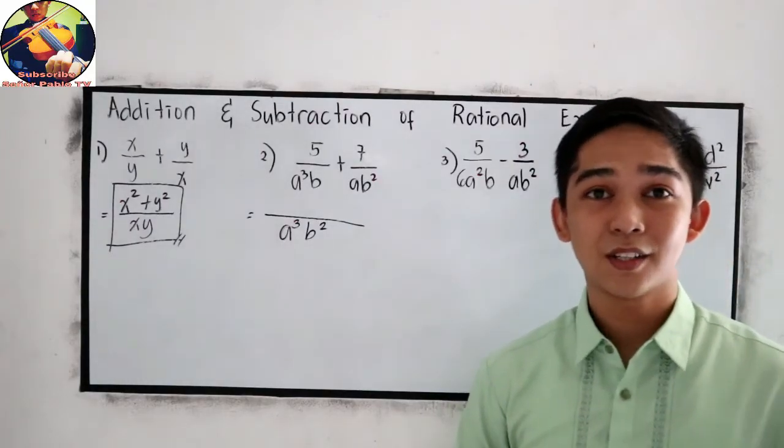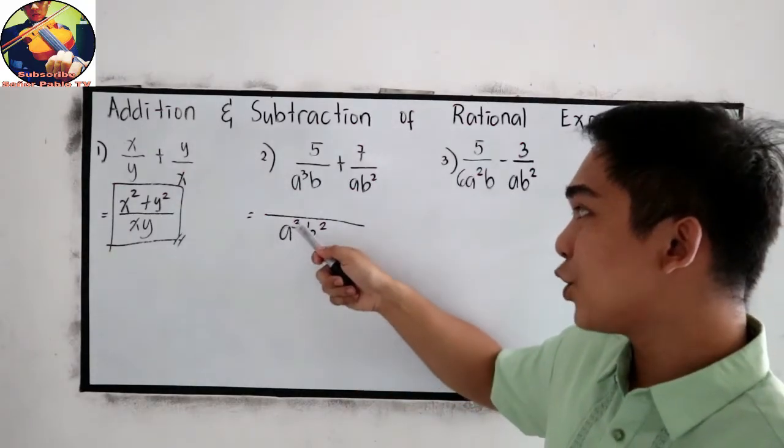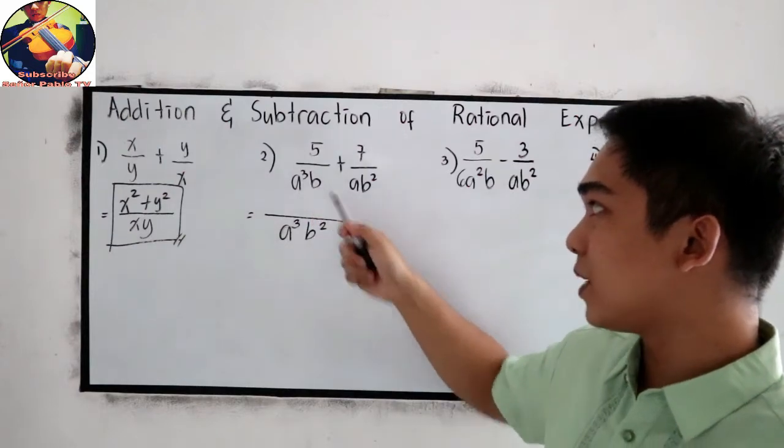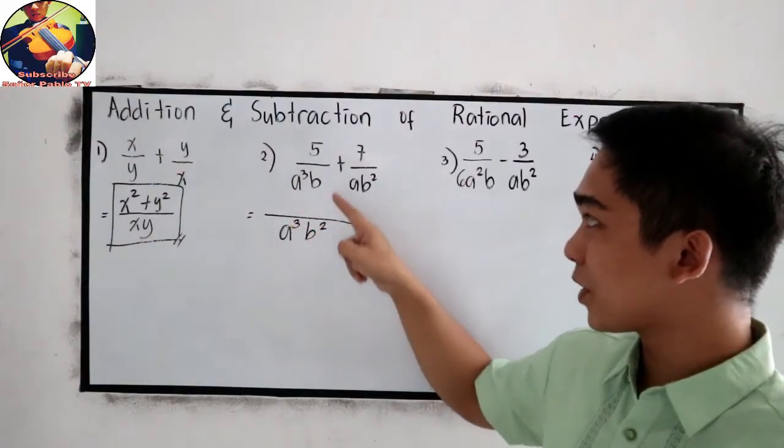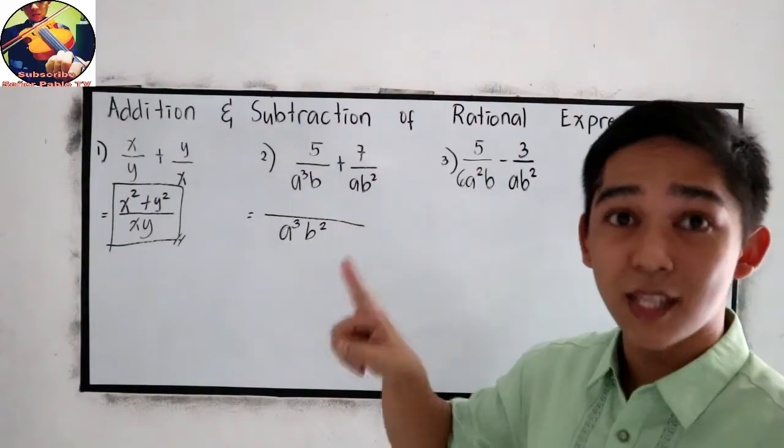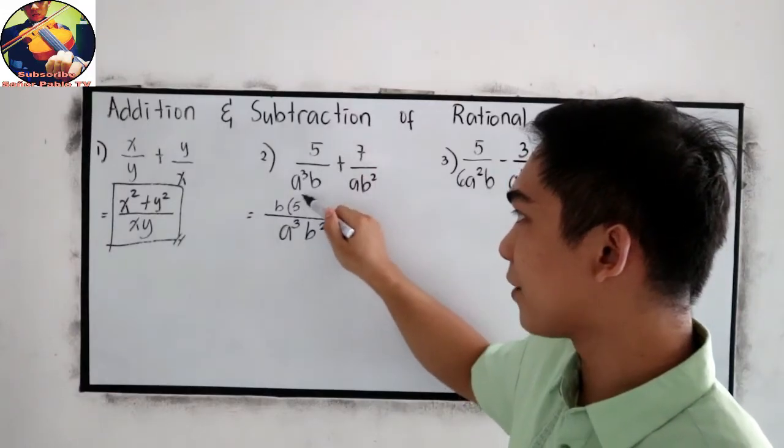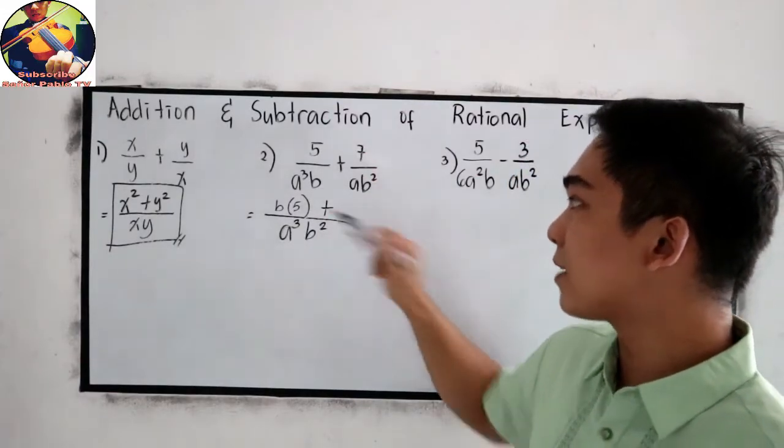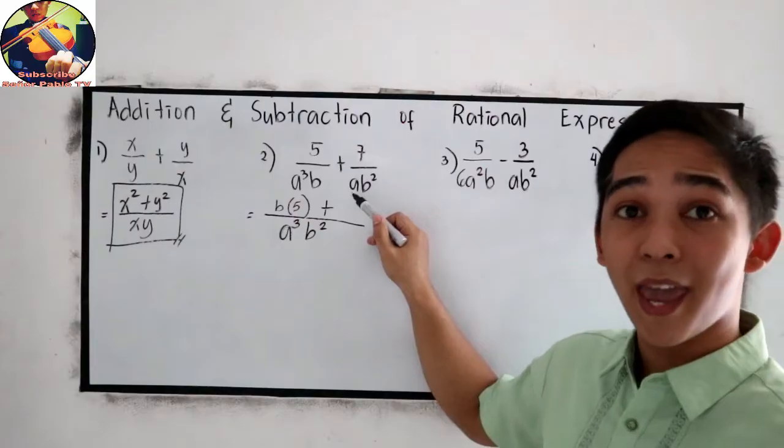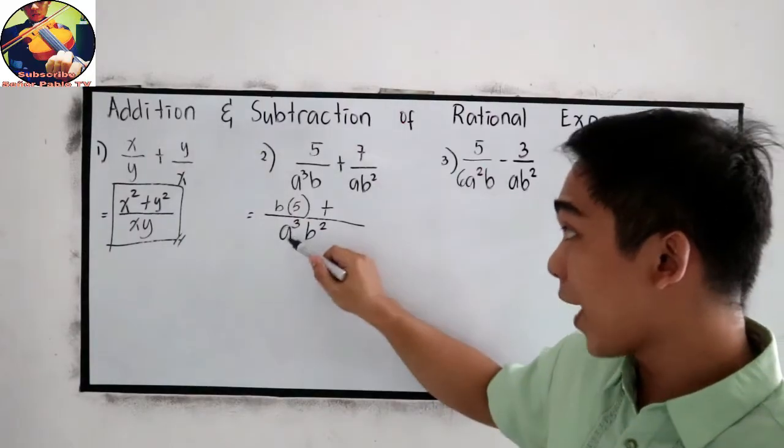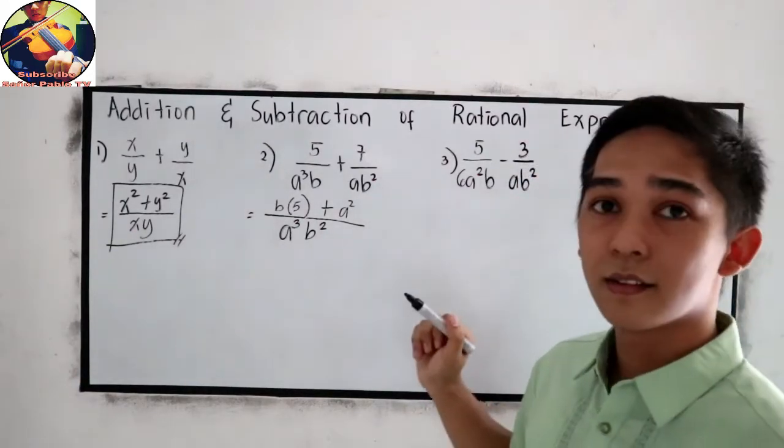That will be our LCD. Now, divide. a cubed b squared divided by a cubed b. So a cubed will be cancelled out. So b squared divided by b. So the remaining is b. So b, we're going to multiply to our numerator, which is 5. Copy the plus sign. Next, we have a cubed b squared divided by a b squared. So a cubed divided by a, that is a squared. b squared divided by b squared, that is 1.